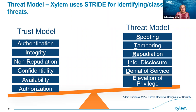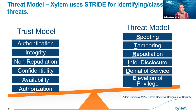Once threats are documented, they are mitigated by enforcing security controls within the process. These security controls become part of our trust model of the solution. The trust model is generally built on security principles like authentication, integrity, non-repudiation, confidentiality, availability, and authorization. These principles ensure the firmware code is handled confidentially, that access control is implemented on the code, that there is no tampering of the code, and that all useful details are locked.